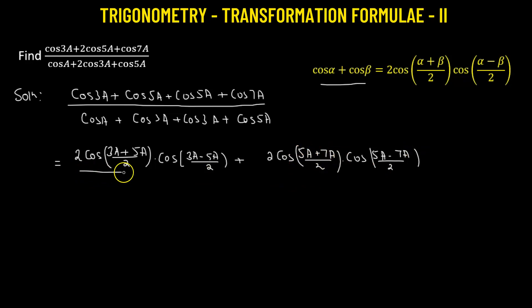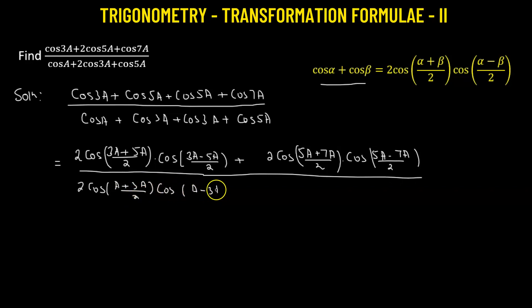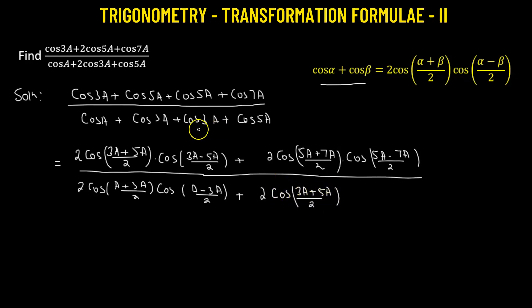Now going to the denominator: cosine of a added to cosine of 3a gives two times cosine of (a + 3a)/2 multiplied by cosine of (a − 3a)/2, plus two times cosine of (3a + 5a)/2, taking the sum between cosine 3a and cosine 5a, multiplied by cosine of (3a − 5a)/2.